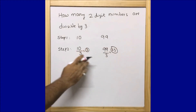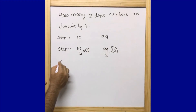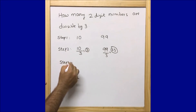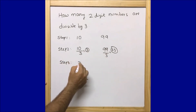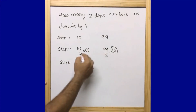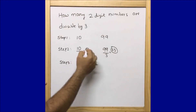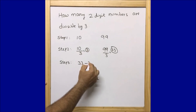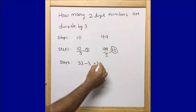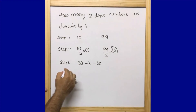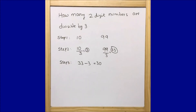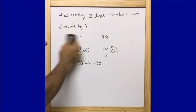Step three: I am going to subtract the lower quotient from the larger quotient. So 33 minus 3 equals 30. That's the answer — there are 30 two-digit numbers divisible by 3. Don't you feel that this is easy?